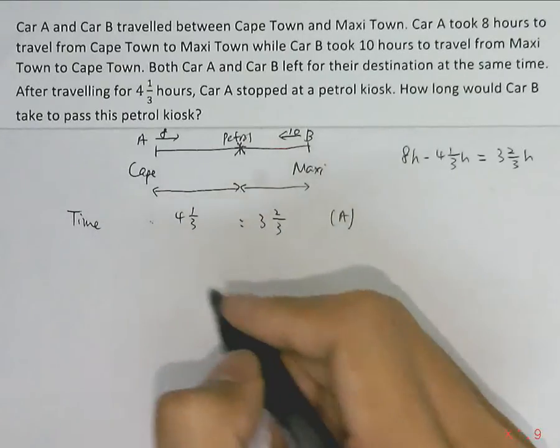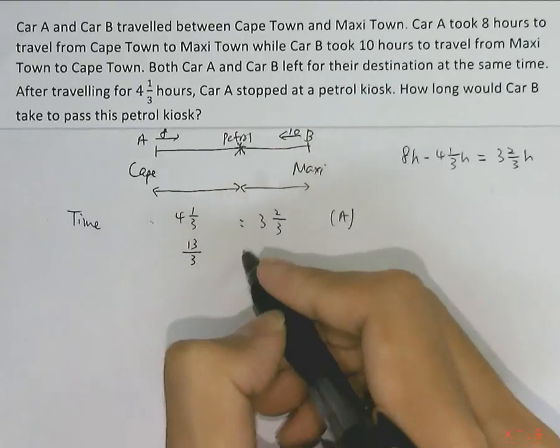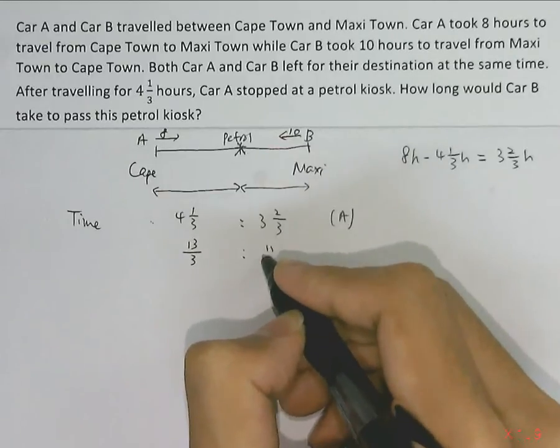So this can be simplified. We'll change them into improper fractions. So this will become 13/3, and this will become 11/3.